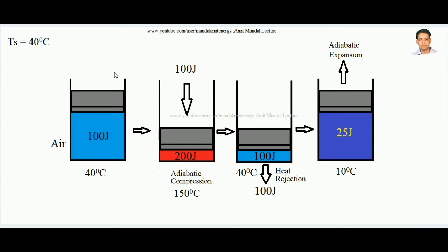There is no phase change of air in the entire cyclic process. This type of refrigeration system ideally works on a thermodynamic cycle called the reverse Brayton cycle. A gas turbine runs on the Brayton cycle, but the gas cycle refrigeration system works on the reverse Brayton cycle.